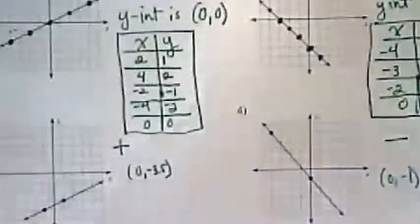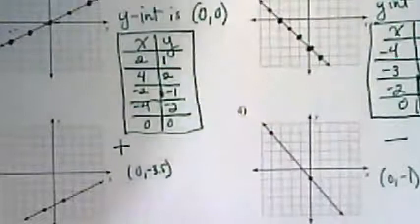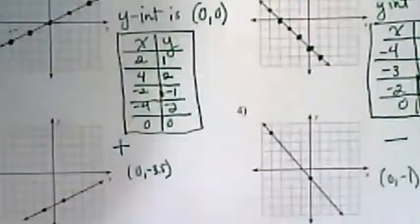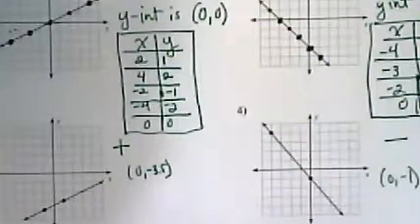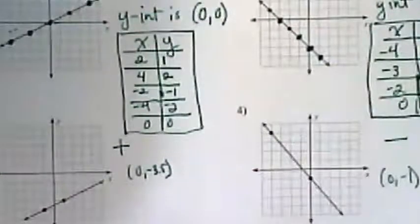So with the other 14 graphs, I want you to see if you can make x-y tables for those as well. Try to find at least 4 if possible. There might be a couple where it's not possible.